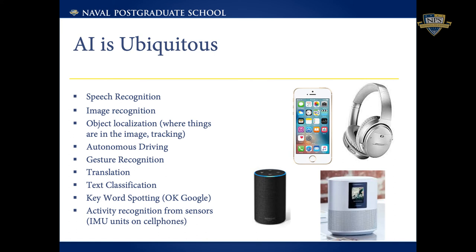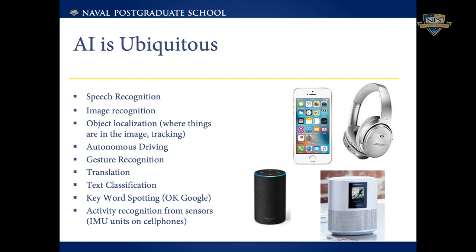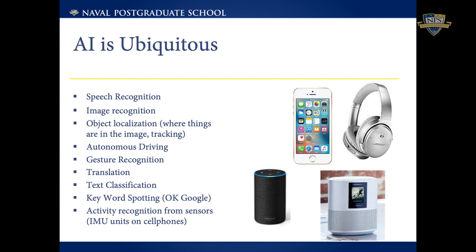AI is everywhere at this point. The models I've described are used in consumer electronics — you'll likely engage with them on a daily basis. They're really big in autonomous driving: autonomous vehicles have radars, lidars, and cameras, all of which utilize supervised learning to extract information about the world around you. Text classification and natural language understanding are also very big in this space. That was all I had for the lecture — I'm open to any questions you might have.